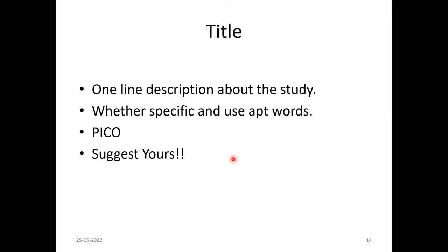When critically appraising a journal article, start with the title. The title is usually a one-line description of the study. Assess whether the title is specific, whether apt and precise words have been used, and most importantly, whether the PICO acronym has been used in the title or not. You can also suggest a better title for the article — that is how you learn manuscript writing.